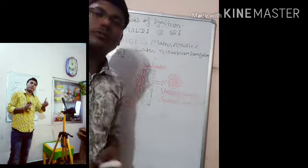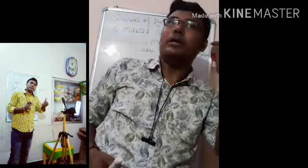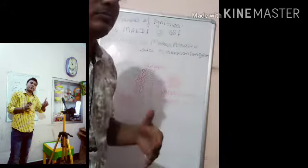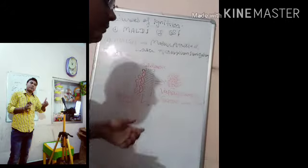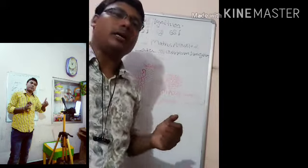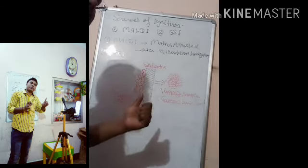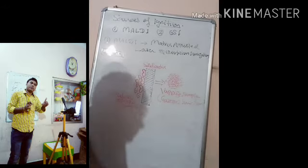One second, good morning students. This is the first video on the components of the mass spectrometer where we discussed that there are three components: source of ionization, that is MALDI ESI, number two analyzer, number three detector.